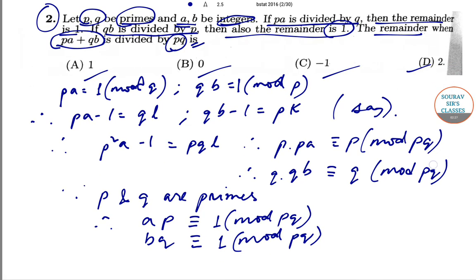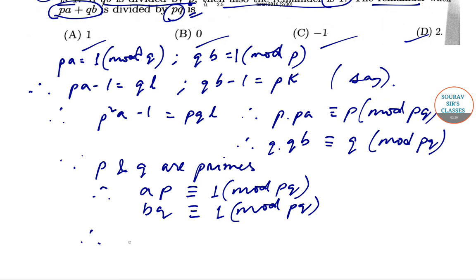So upon addition this will give us that PA plus QB will be congruent to 2 mod PQ, as such remainder will be equal to 2, which is option D.